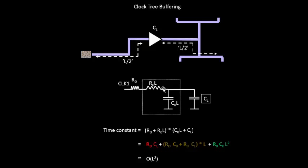In these equations, all your L's will now change to L by 2. The per unit length resistance and capacitance R0 and C0 will remain unchanged, but the length will change from L to L by 2.